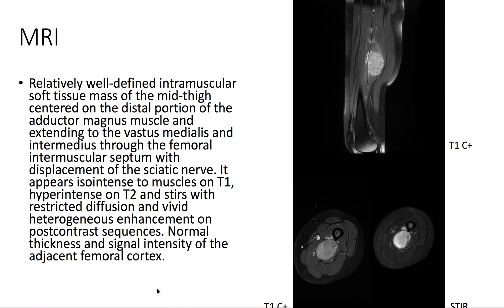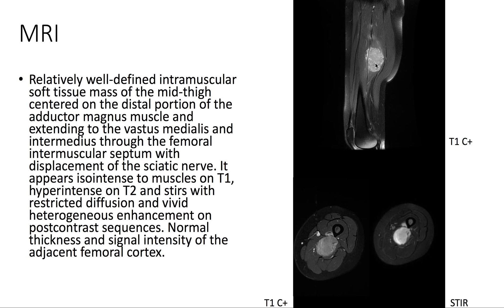On the MRI, we see a well-defined intramuscular soft tissue mass centered on the adductor magnus muscle with extension towards the vastus medialis and intermedius. On post-contrast imaging, we see that there's heterogeneous enhancement. The mass is noted to be hyperintense on T2 and isointense to muscle on T1.